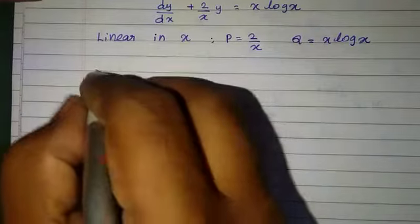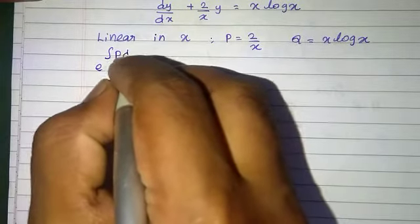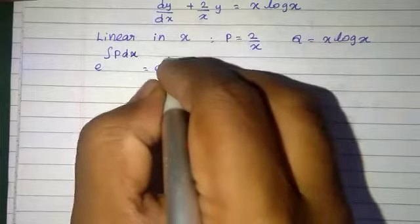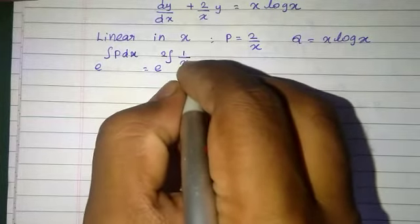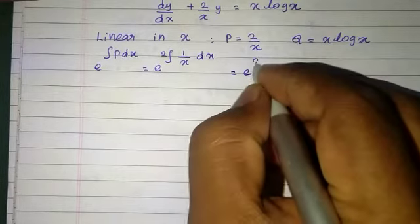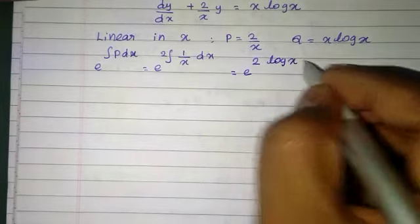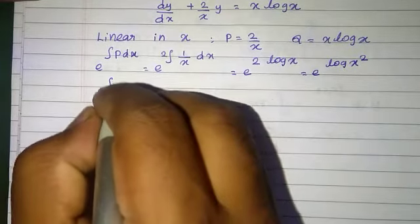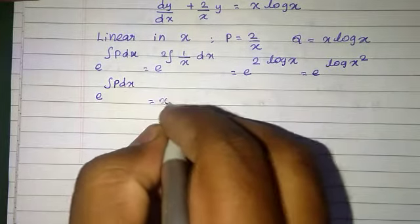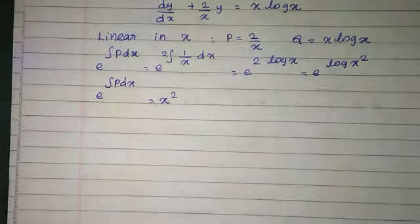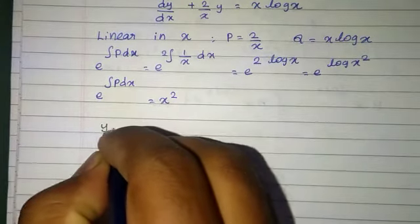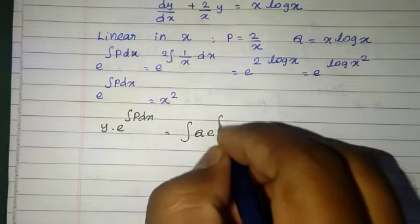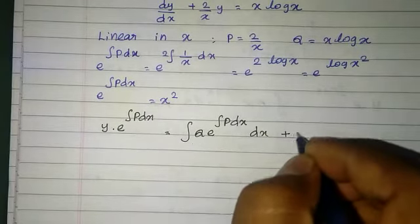We find the integrating factor: e power integral P dx equal to e power integral 2/x dx. Taking the constant 2 out, e power 2 into integral 1/x is log x, giving e power 2 log x, which equals e power log x squared. Since e power log cancels, the integrating factor equals x squared.